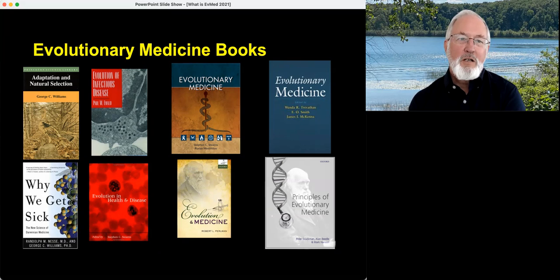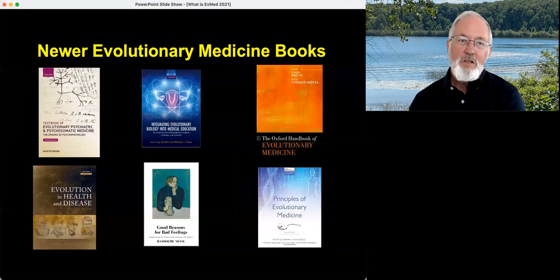These are some of the first books that got things going. Paul Ewald wrote a wonderful book about the evolution of infectious disease, inspired in part by Adaptation and Natural Selection, the book by George Williams that set us straight about group selection. The other books there are early ones in the field, including Why We Get Sick, my book with George.